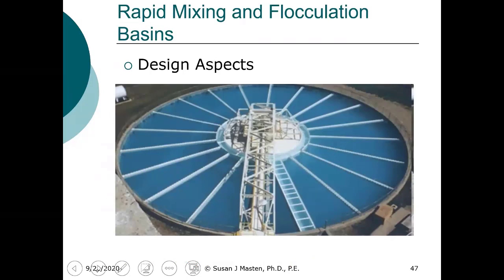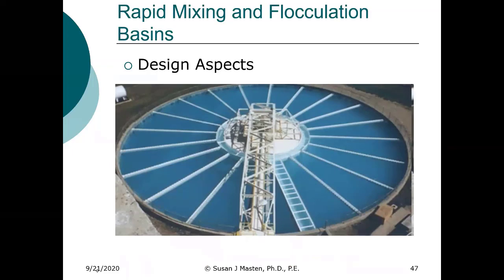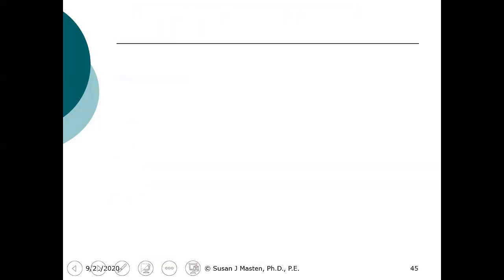Now we're going to move on to rapid mix. We've looked at how to determine alum doses and at the reaction of alums. Now we want to look into the design aspects. The question was how do we get the 50 milligrams per liter value.